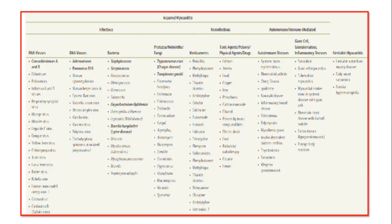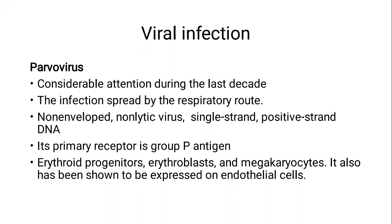We will start with parvovirus B19, which received considerable attention during the last couple of decades. This virus is spread by respiratory route. It is a non-enveloped, single-stranded DNA virus. It binds to group B antigen found on erythroid progenitors, erythroblasts, megakaryocytes, and the endothelial cells. So it is called an erythrotropic and endotheliotropic virus.